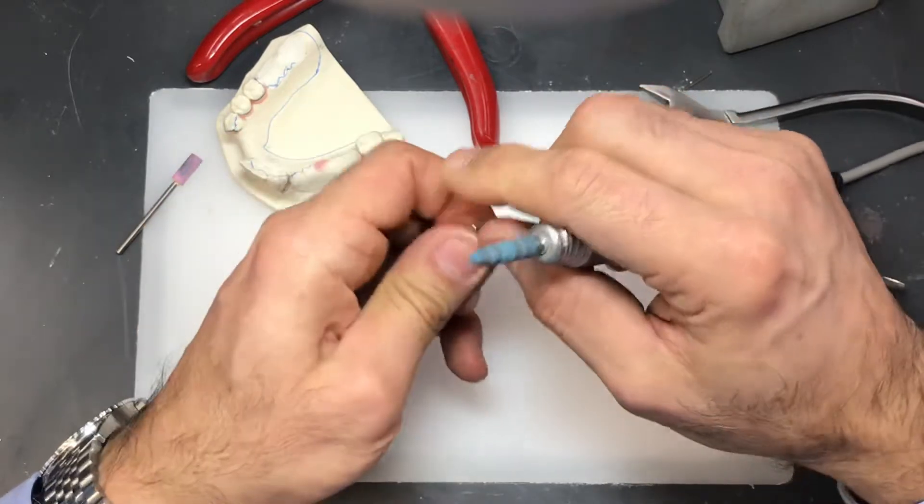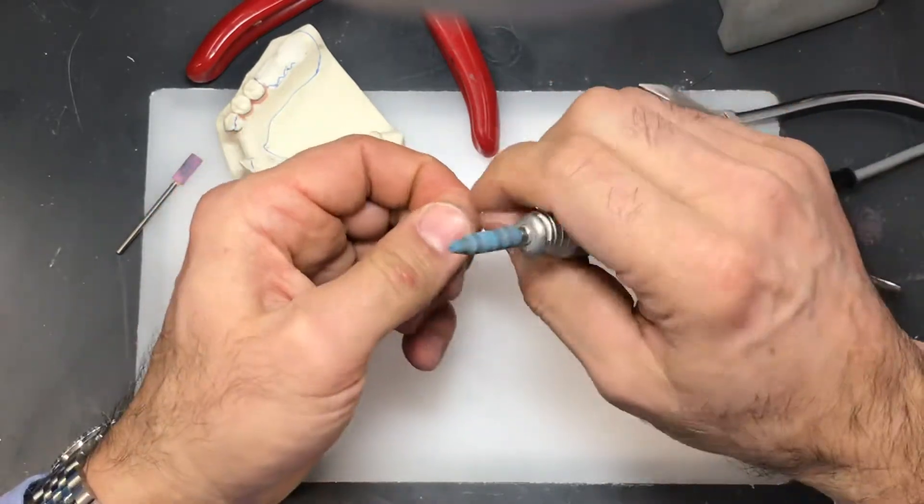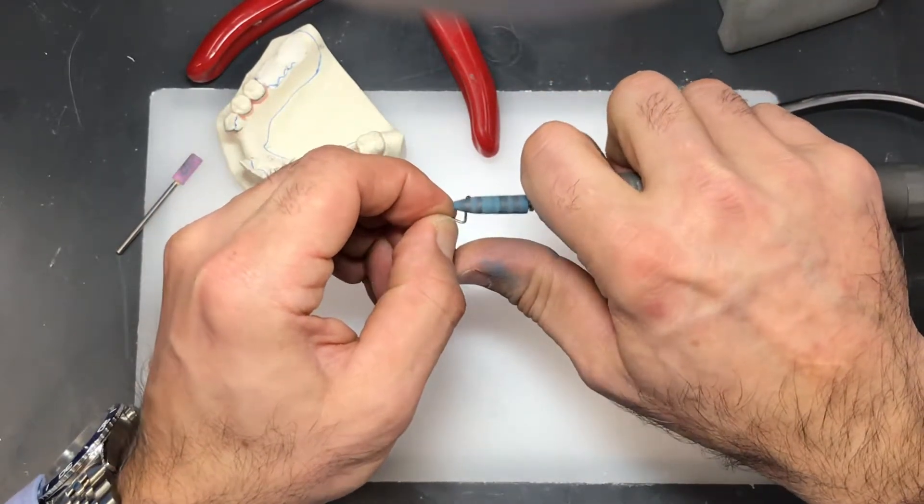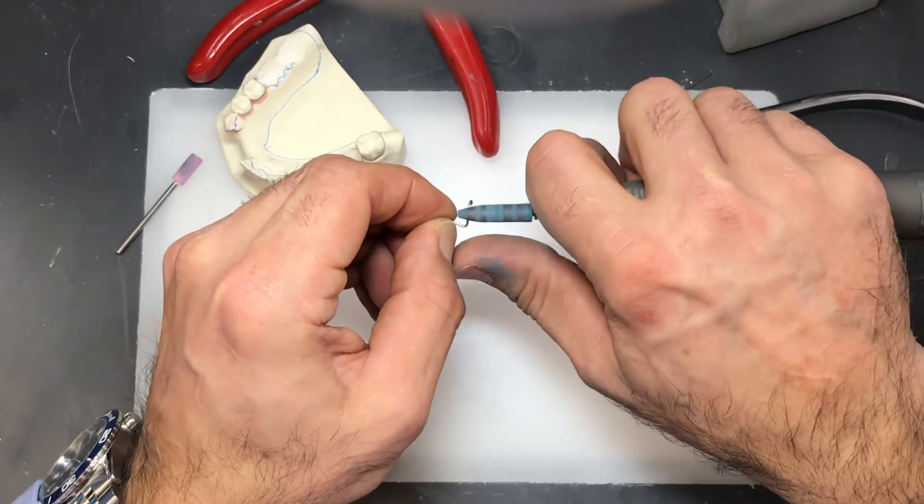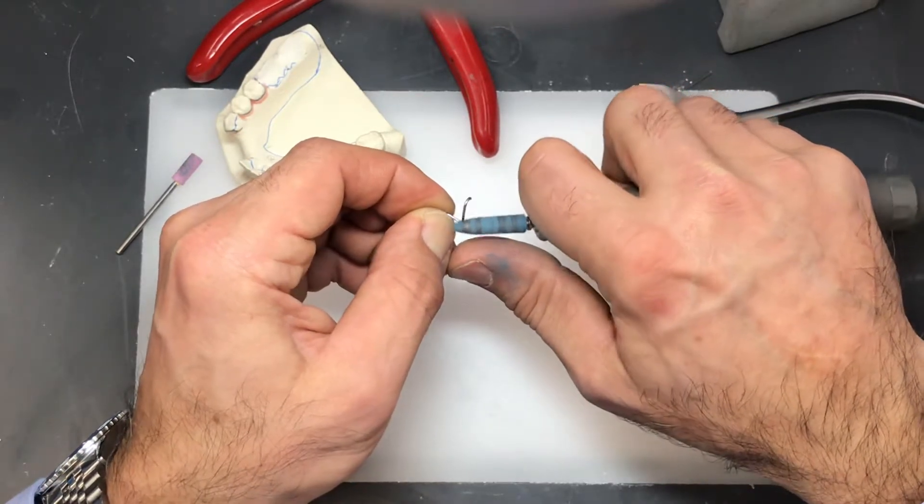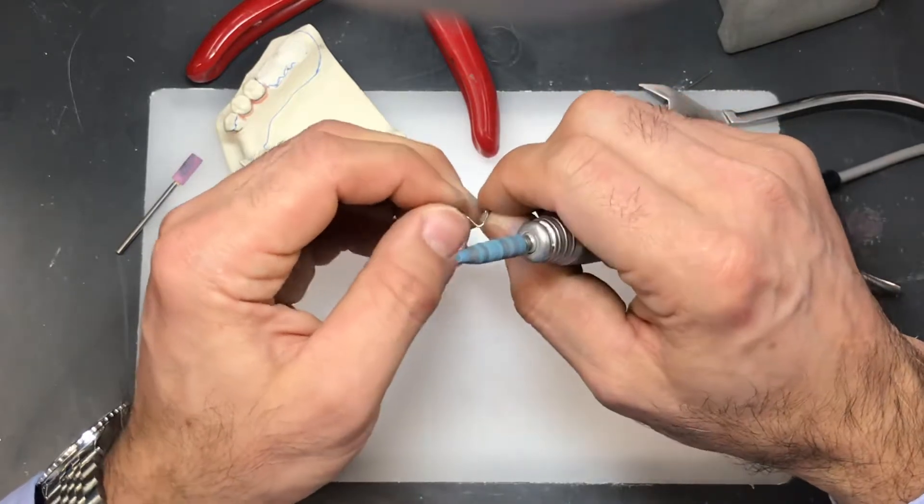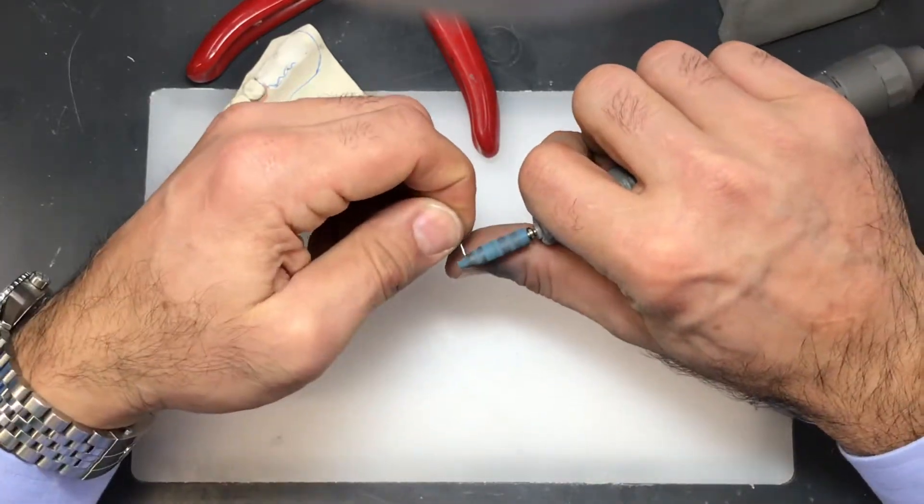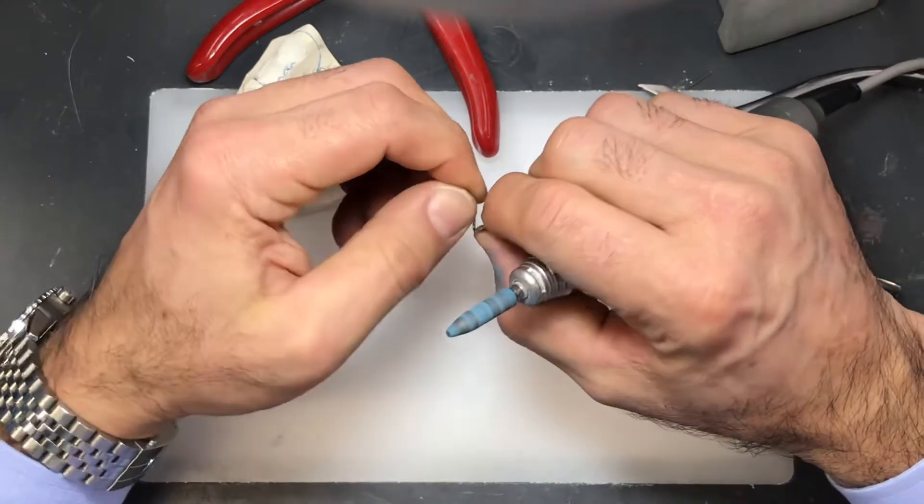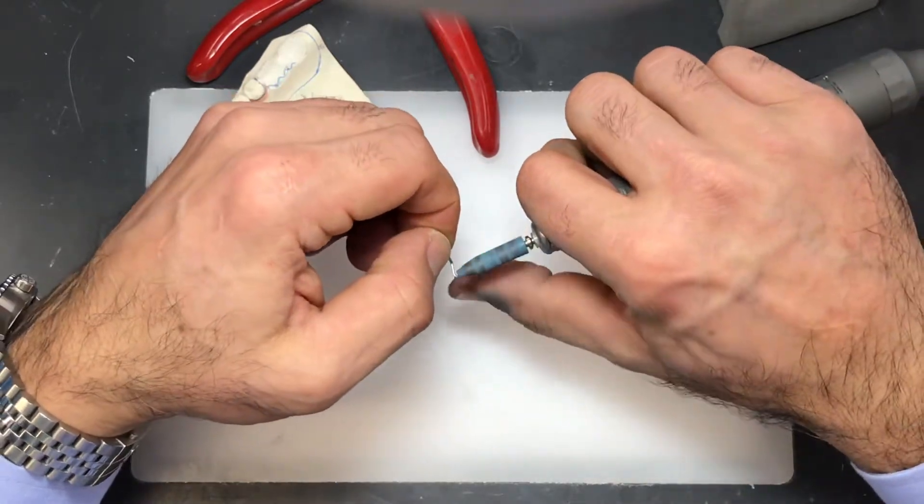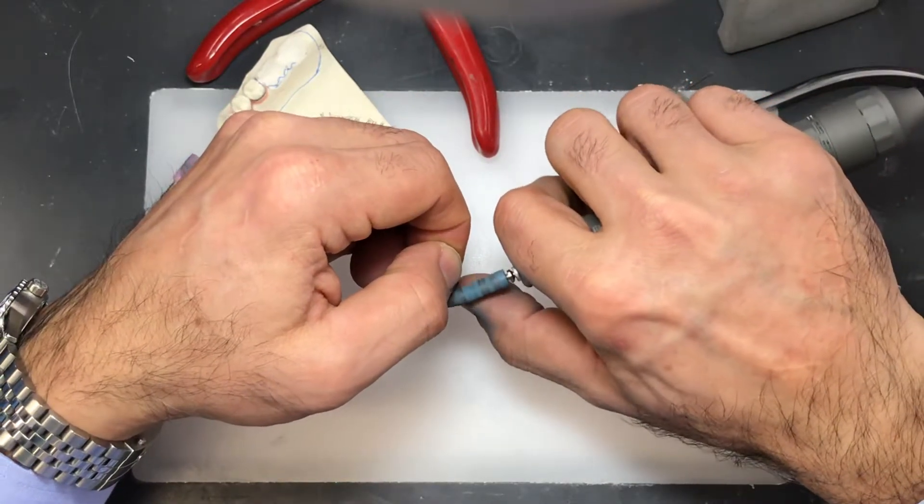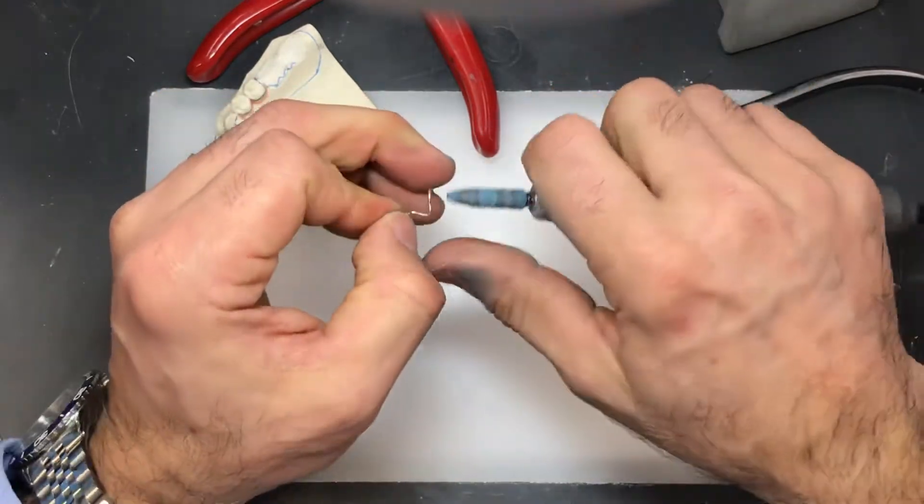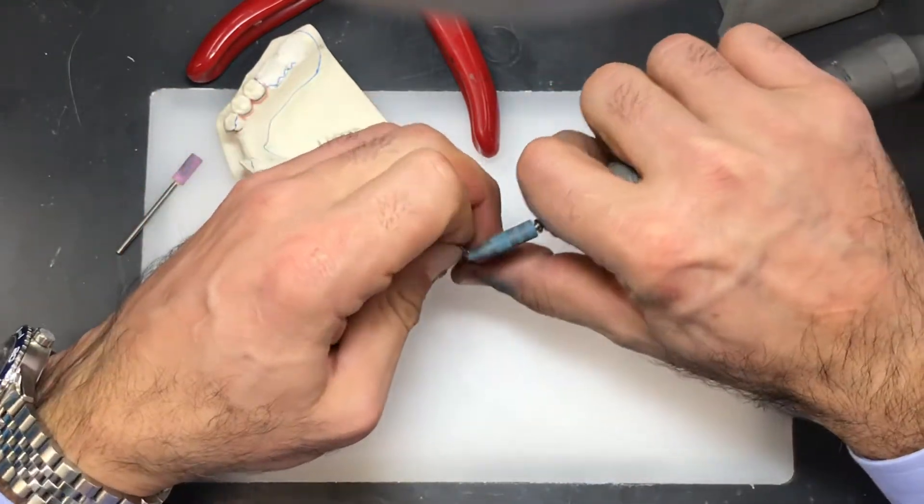You need to polish the wire with a rubber point to get rid of the little nicks. Keep in mind the more you start adjusting this wire or polishing this wire with a rubber point, you're making it smaller and smaller in diameter.